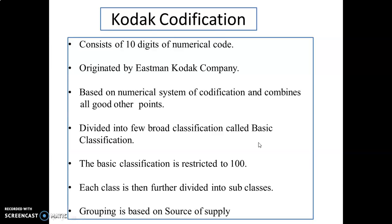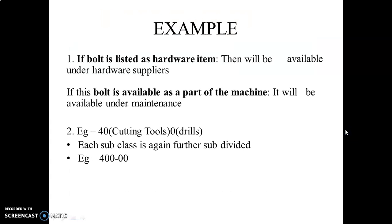Coder codification: it consists of a ten-digit numerical code and was originated by the Eastman Coder Company. It is based on the numerical system of codification and combines all other good points, divided into basic classification. The basic classifications are restricted to one hundred, and each class is further divided into sub-classes. The grouping is based on the source of supply. For example, if a bolt is listed as a hardware item, it is available only under hardware supplies; if the bolt is available as part of a machine, it is listed under maintenance parts.